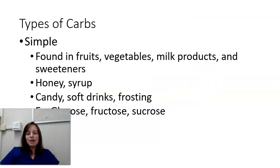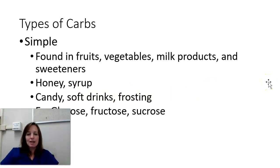There are different types of carbs: simple and complex. Simple carbohydrates are found in fruits and vegetables, milk products and sweeteners, honeys and syrups and candy and soft drinks, and frostings. Those are all foods containing very high levels of simple carbs.